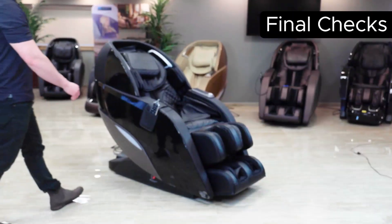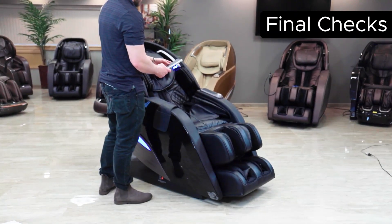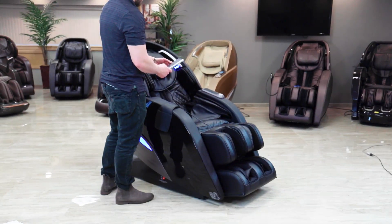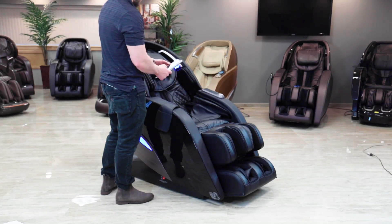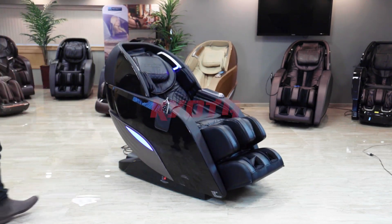With the chair fully assembled, toggle the power switch back on and use the remote to run an auto program. Use this time to ensure that the chair is running properly and that all airbags are inflating. If everything is going smoothly, the chair is now ready to use. Take a break. You've earned it.